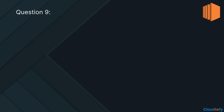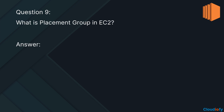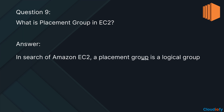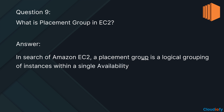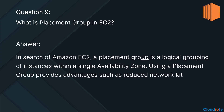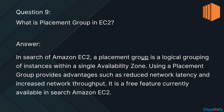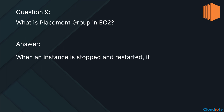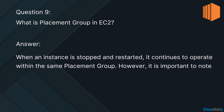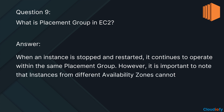The next question is: what is a placement group in EC2? In Amazon EC2, a placement group is a logical grouping of instances within a single availability zone. Using a placement group provides advantages such as reduced network latency and increased network throughput. It is a free feature currently available in Amazon EC2. When an instance is stopped and restarted, it continues to operate within the same placement group. However, instances from different availability zones cannot be added to the same placement group.